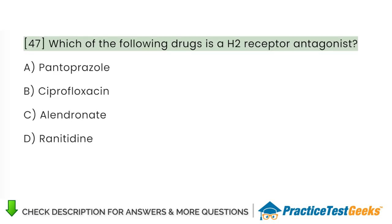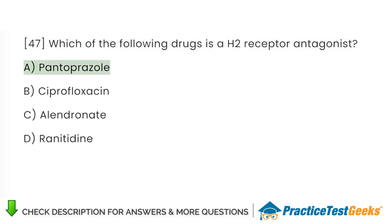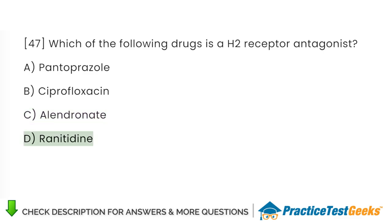Which of the following drugs is a H2 receptor antagonist? A. Pantoprazole. B. Ciprofloxacin. C. Alendronate. D. Ranitidine.